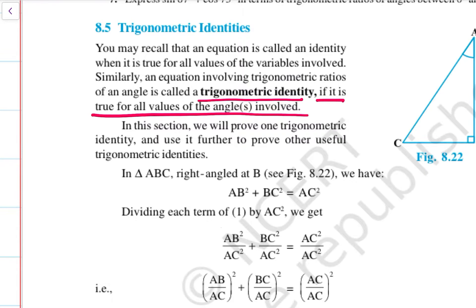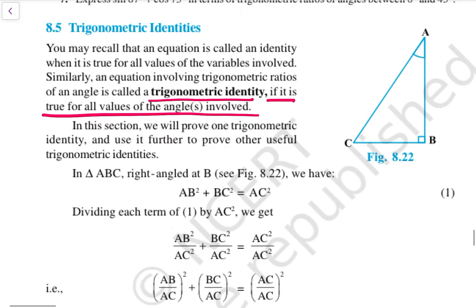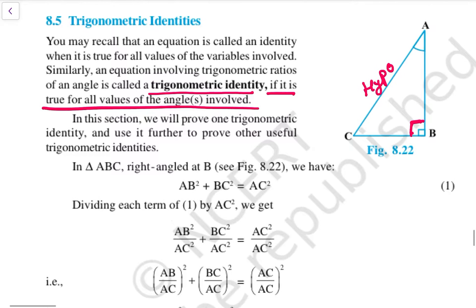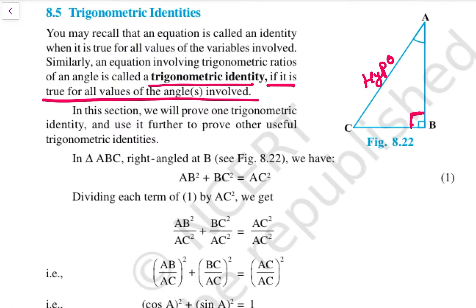In this section, we will prove trigonometric identities and use them further to prove other useful identities. In triangle ABC as shown in the figure, AC is the hypotenuse. Applying Pythagoras theorem to the right angle triangle at B, we get AB² + BC² = AC². If we divide the whole equation by each remaining side, we will get the three main identities.